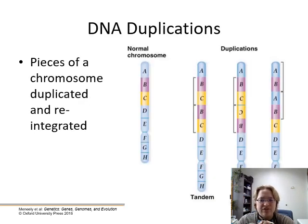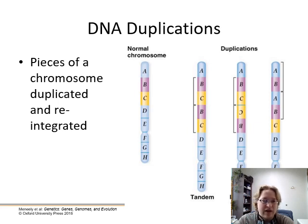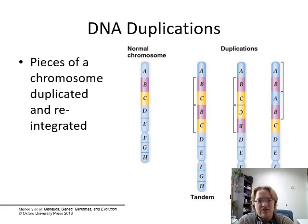In the smallest changes category, we have DNA duplications, where basically a whole chromosome or part of a chromosome is duplicated and then reintegrated back into the genome. There are different versions where the DNA has been flipped or swapped, but all of these lead to more DNA present in the genome and more copies of genes available to mutate, change, or be worked upon.